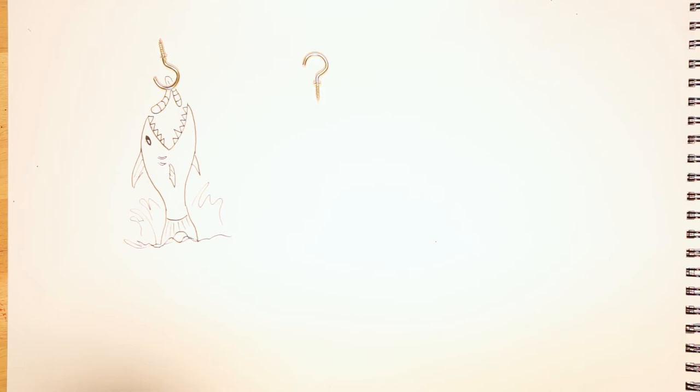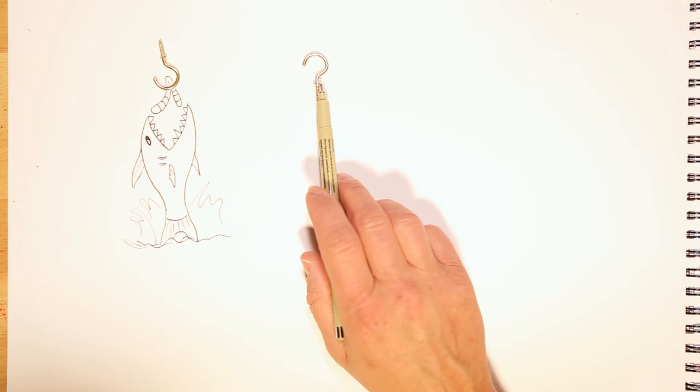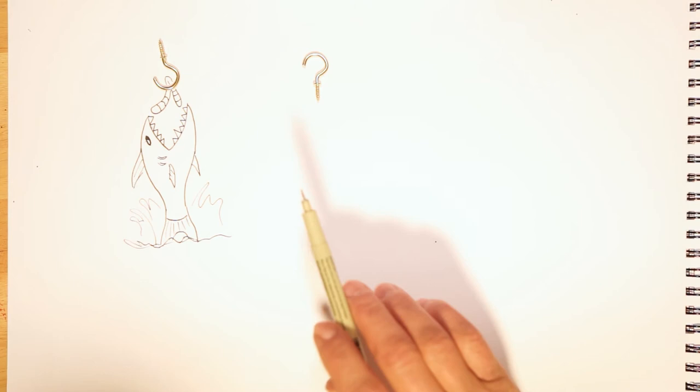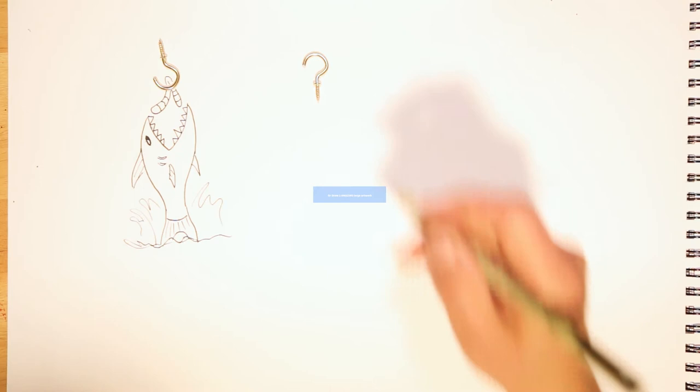You can put all of your drawings on one page. And also just a friendly reminder, if you want to use the same object to start all of your drawings, you can, or you can choose a different object for each drawing. I would recommend three to five drawings total. Here I'm going to make a flamingo.